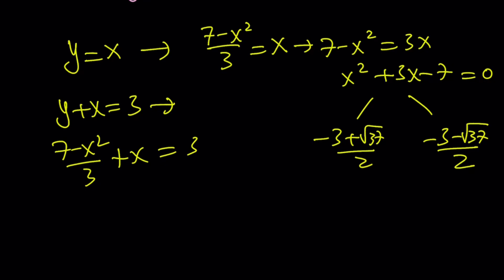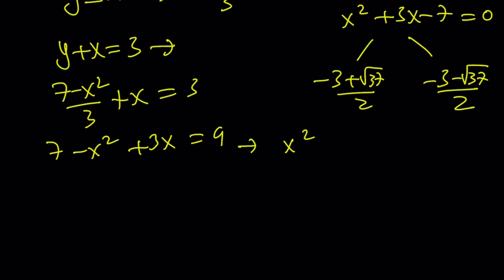And this one is going to give you 7 minus x squared over 3 plus x is equal to 3. Multiply everything by 3. Easier than making a common denominator. Same thing. Sort of. Put everything on the same side. Let's see. x squared minus 3x plus 2 is equal to 0. Yay! This is great of course. Because we heard another solution. Come on. Pretend to be surprised. x equals 1 and x equals 2.